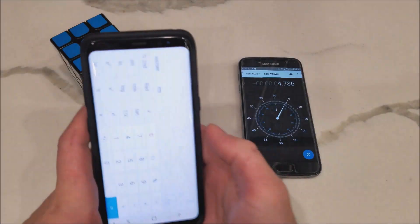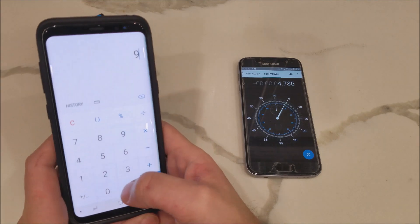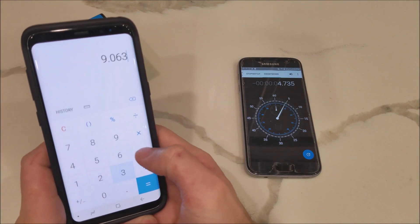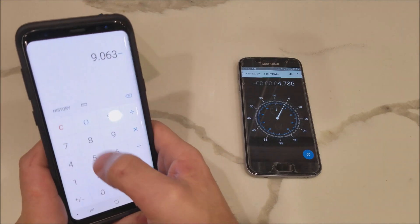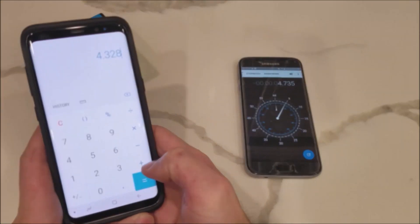So what we'll do now, we will take a calculator and subtract 4.735 from 9.063 to get our final time. Now the time to beat is 4.69 seconds, and we actually beat it. As you can see, the new world record is 4.328 seconds.